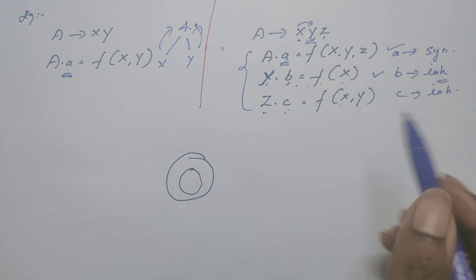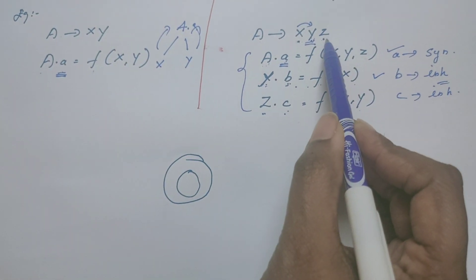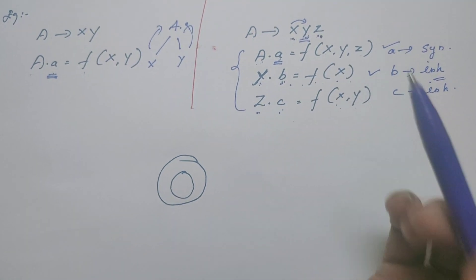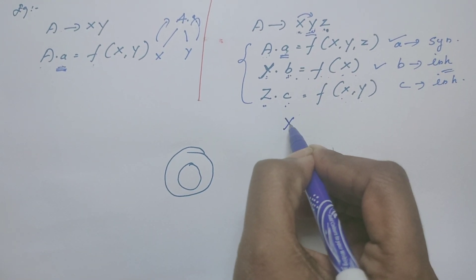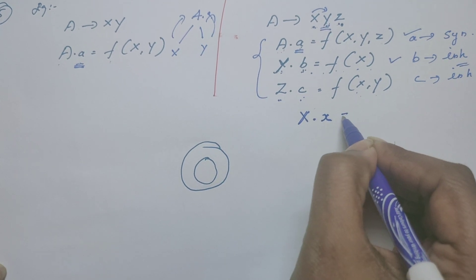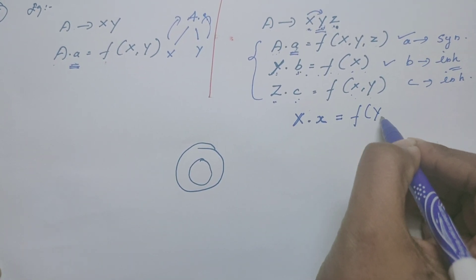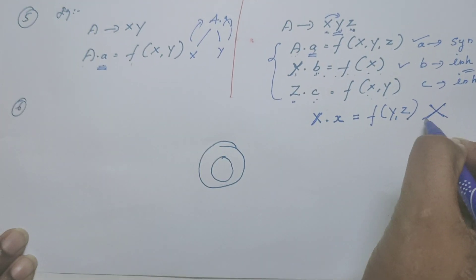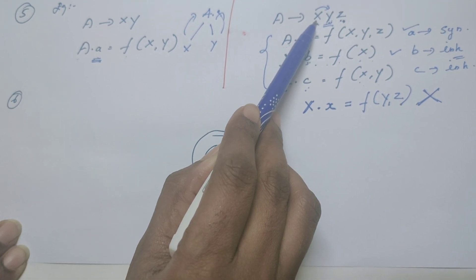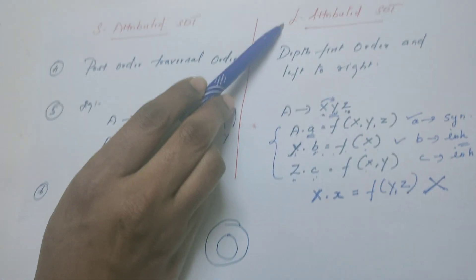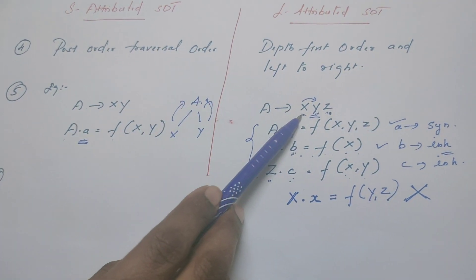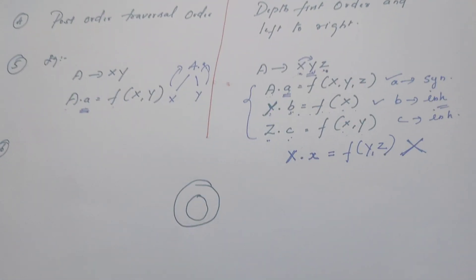One important point to emphasize: when a grammar symbol is inheriting an attribute, it should always inherit the value from the left sibling, not from the right sibling. For example, at grammar symbol X, if X.x is computed from Y and Z — which are to the right — this is not part of L-attributed SDT. Because in L-attributed SDT, inherited values are always calculated from the left grammar symbol. That is why the name itself is L-attributed SDT.